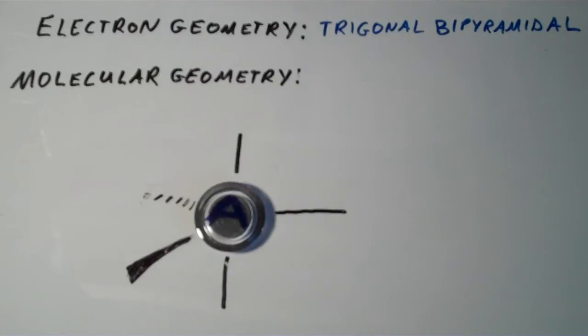So let's continue our discussion on electron geometry and molecular geometry. Recall that when a central atom A has five electron groups around it, that results in a trigonal bipyramidal shape, as shown here.